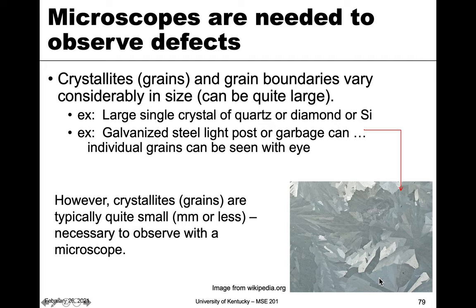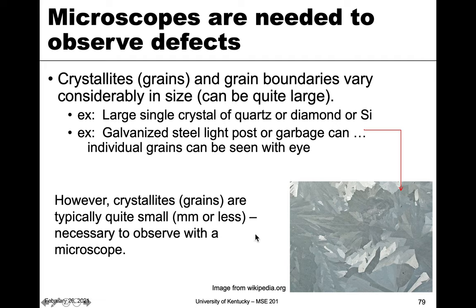Grains, or what we call crystallites, and grain boundaries can vary in size — they can actually be quite large. This is an image from Wikipedia showing zinc grains, particularly from galvanized steel. Galvanized steel is steel coated in a layer of zinc, and those zinc crystals can be so large that you can actually see them. There are light posts and garbage cans in Lexington made out of galvanized steel — if you see one, take a look and you'll notice texture, and each of these different regions is a different grain in that material. These you can view by eye; they're quite large.